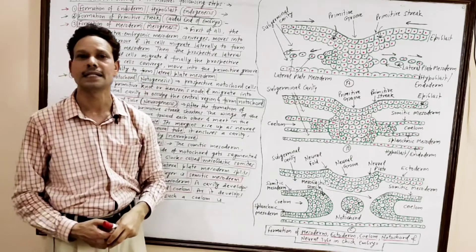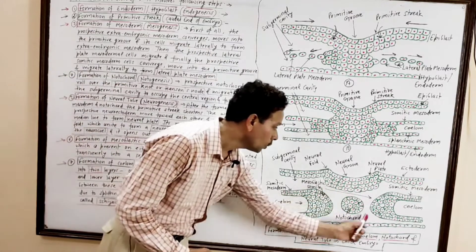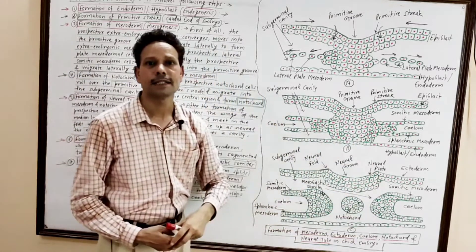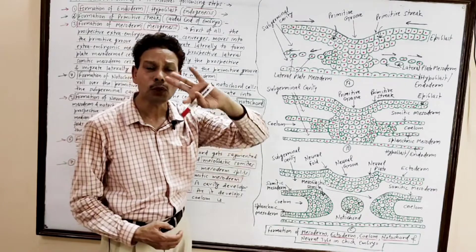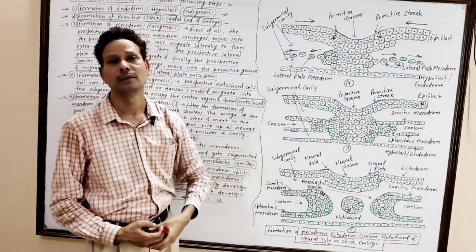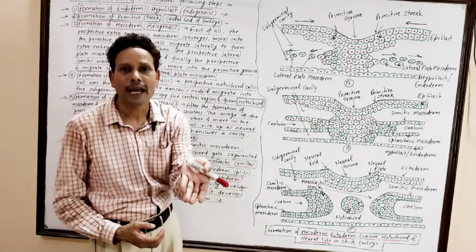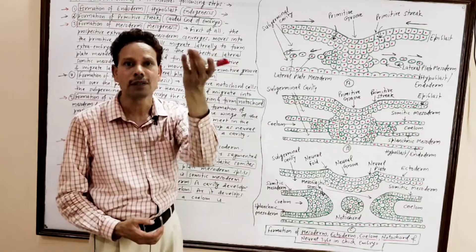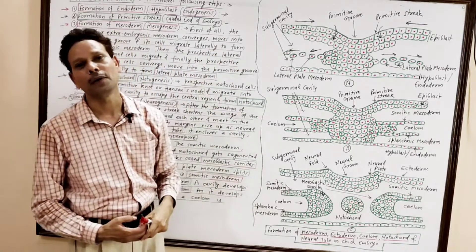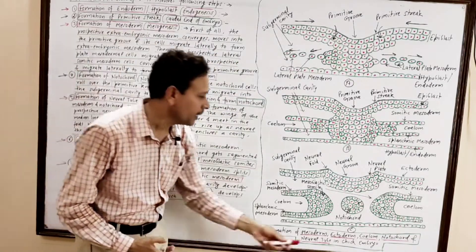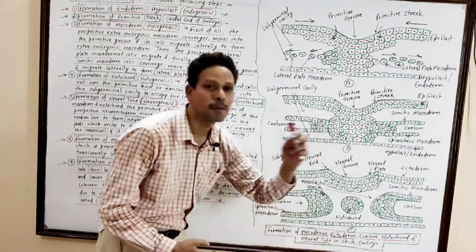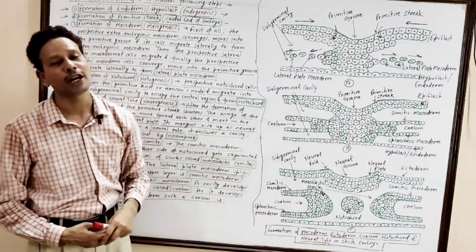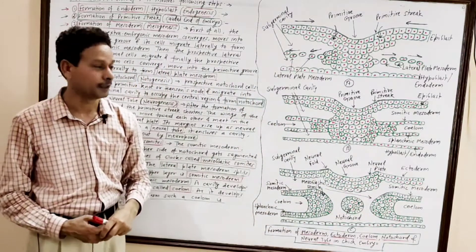The notochord cells roll over Hensen's node (or the primitive node) and the notochord occupies the central part of the sub-germinal cavity.